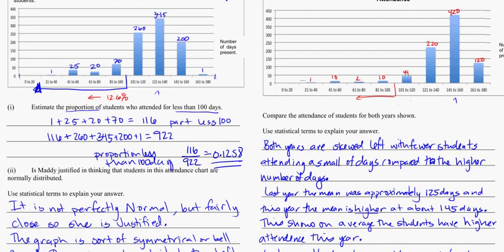So if we think about what that is, less than 100 days, so that's 1 plus 10 plus 2 plus 10, that's just for under the 100, so that's 23 less than 100.